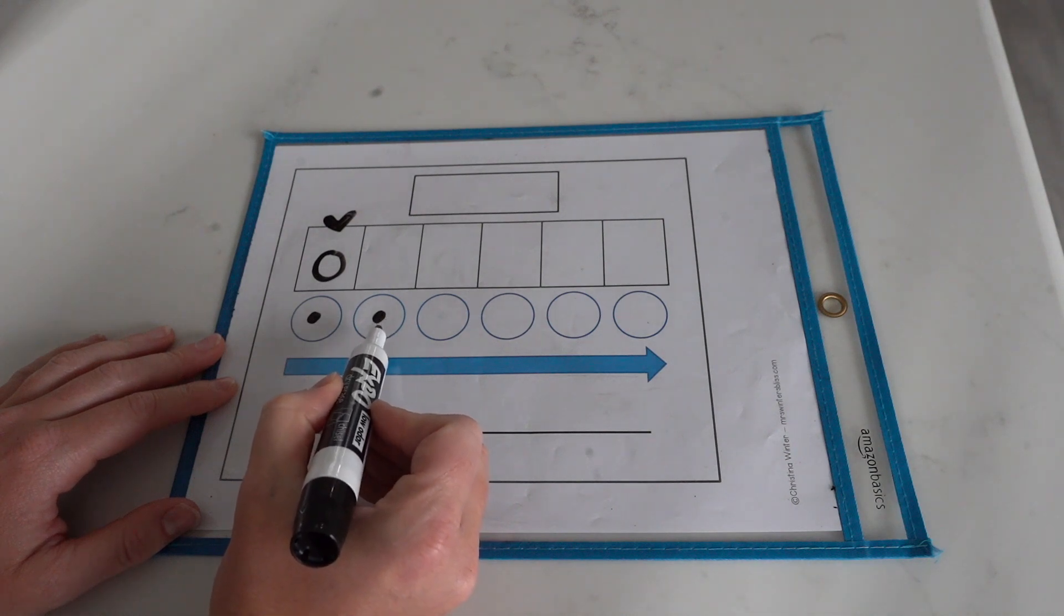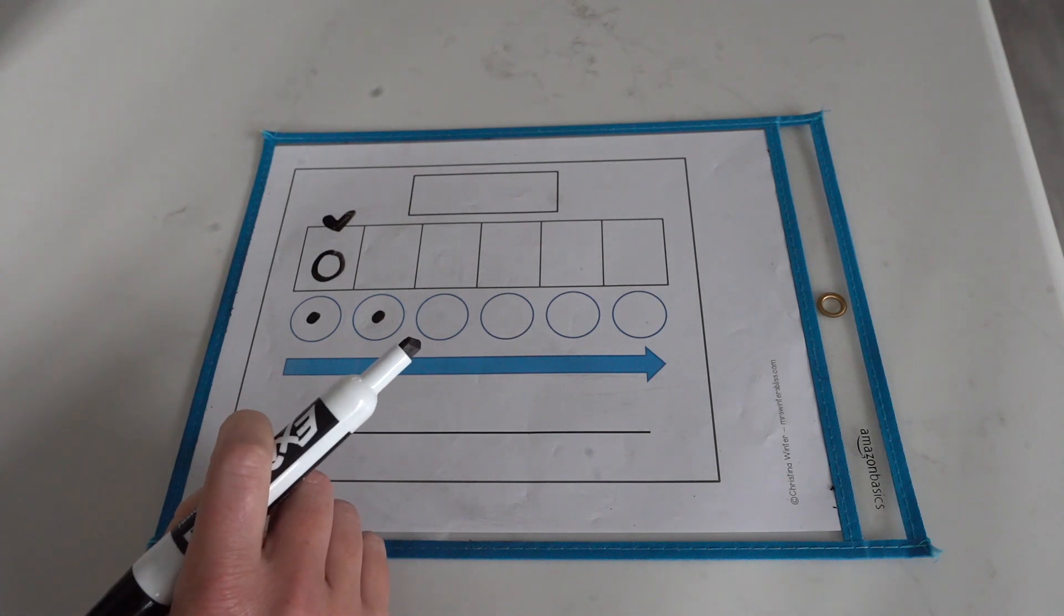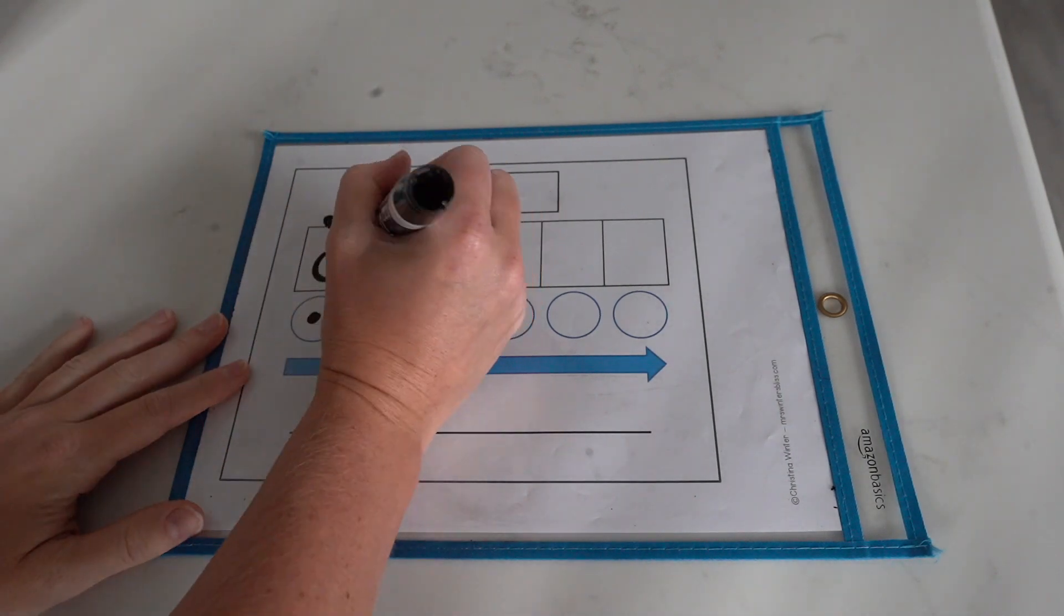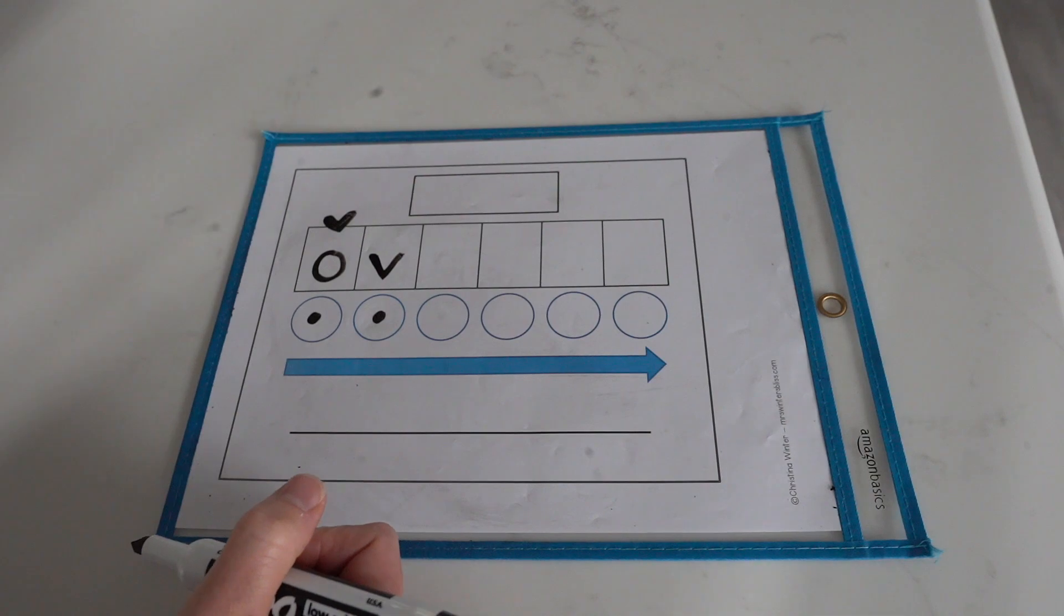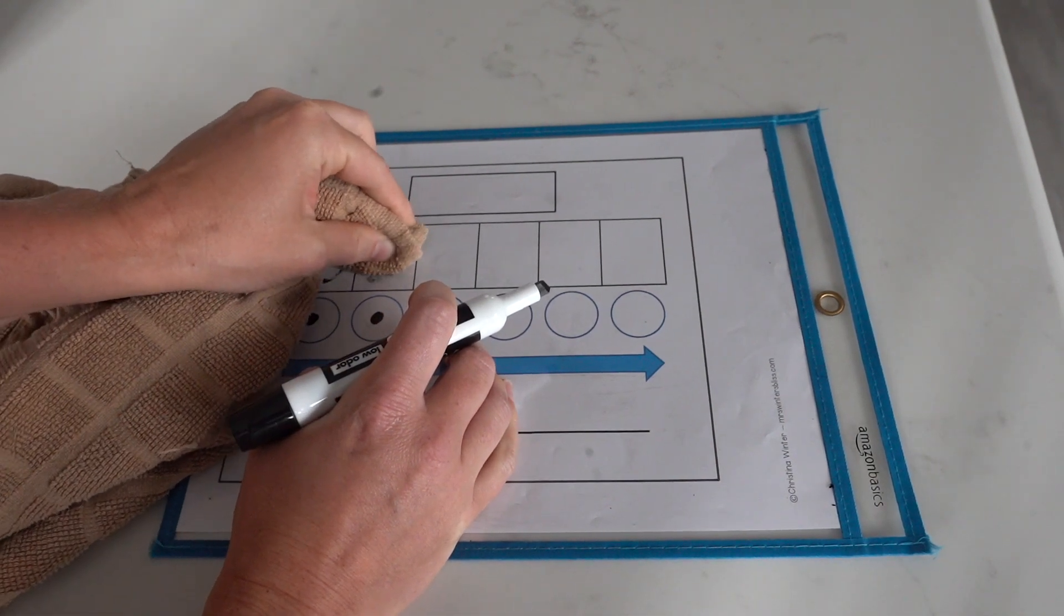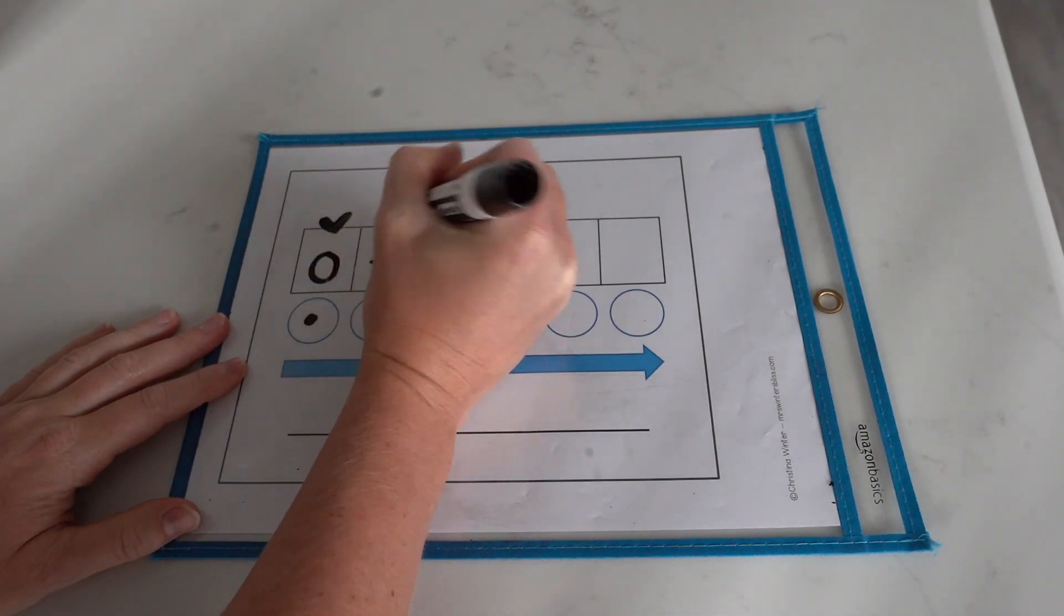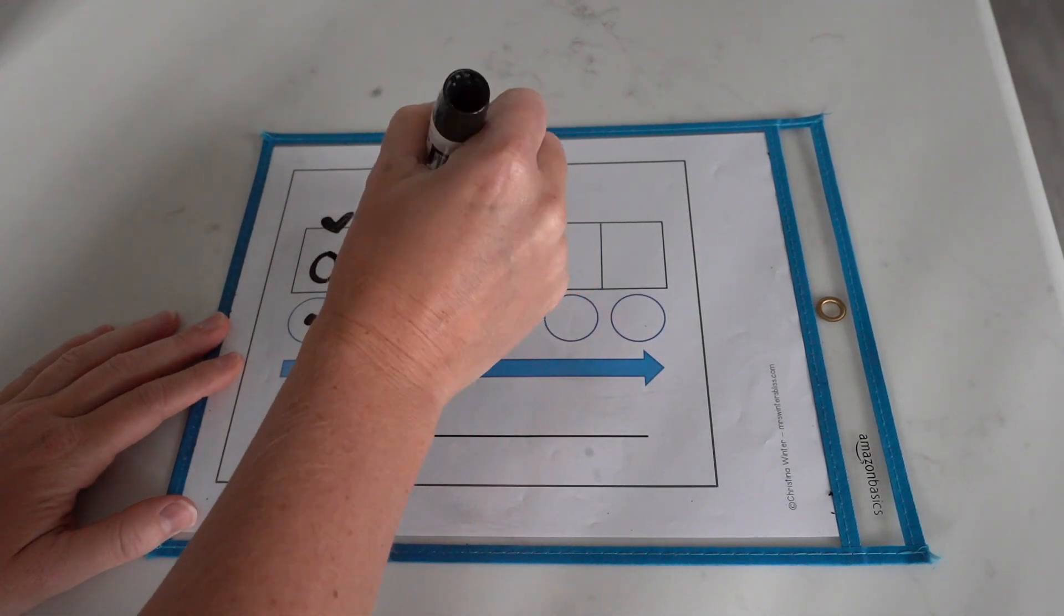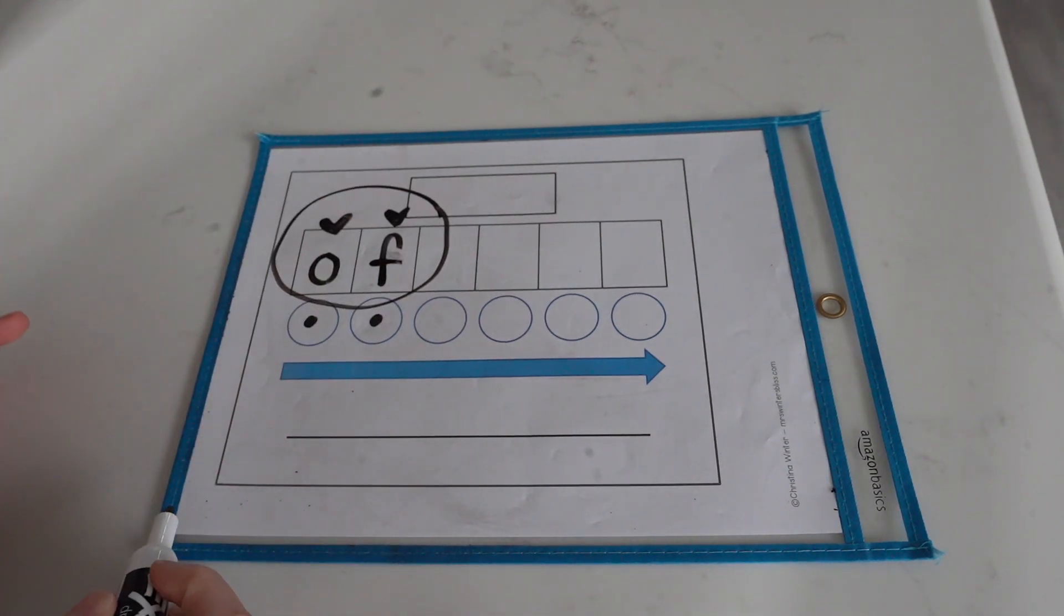The final sound I hear in 'of' is v. Wow. My teeth are on my bottom lip. My voice box is on. V. What consonant makes that v sound typically? If you said v, you are correct. But in this word, a different letter is going to represent the v sound. And it is the consonant f. We have to remember this part with our heart too. Making this word a whole word heart part.